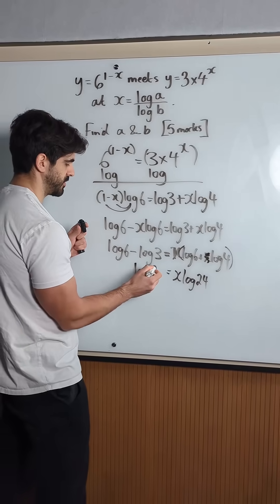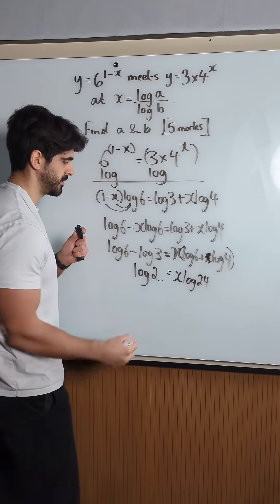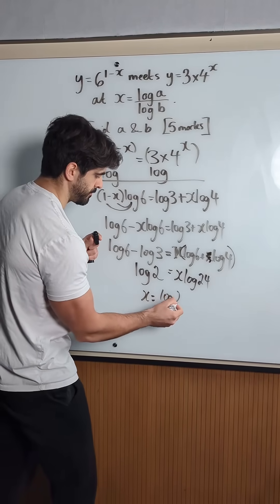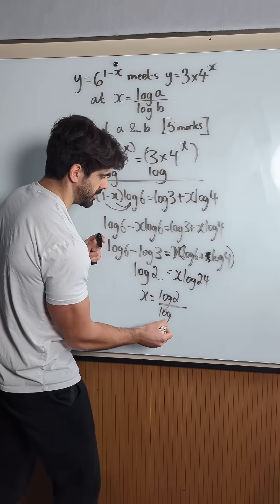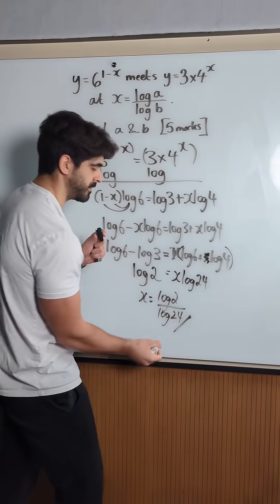You're going to, my calculations is 2. So there you go. x is log 2 divided by log 24. Nice one.